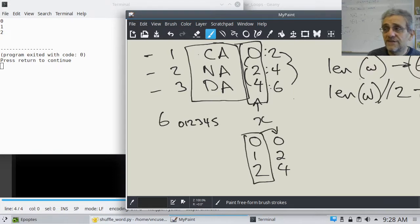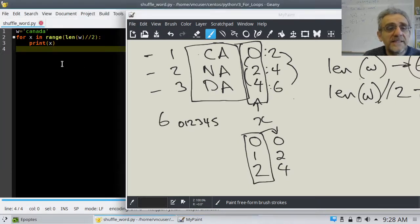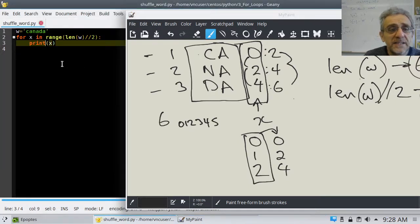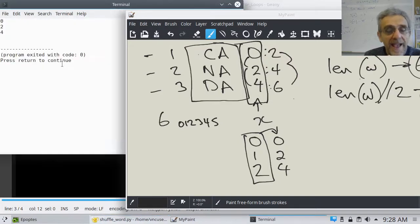Can you see any type of a formula that would take this number and generate this number? I do. It's very straightforward. All I have to do is multiply x by two. So, let's go back. And now, instead of printing x, let's print out two times x. Let's try that. And ta-da, I've got zero, two, four. Excellent.